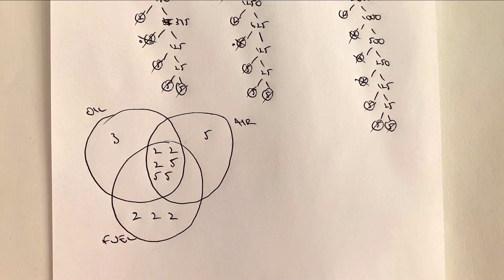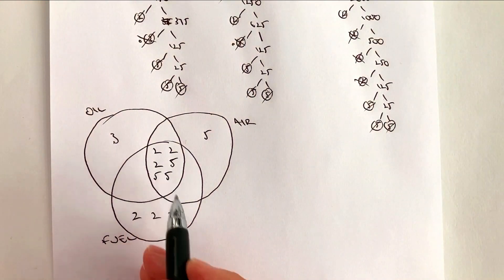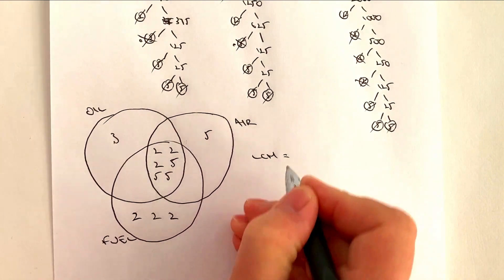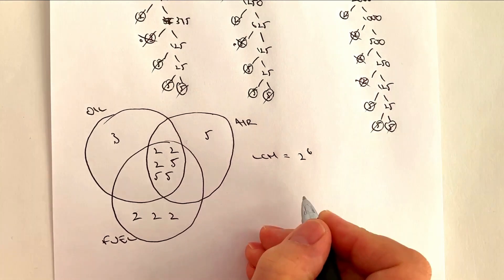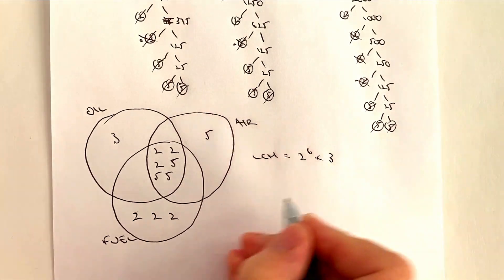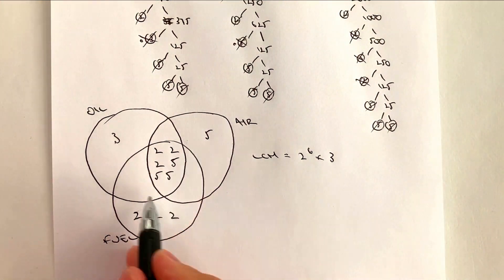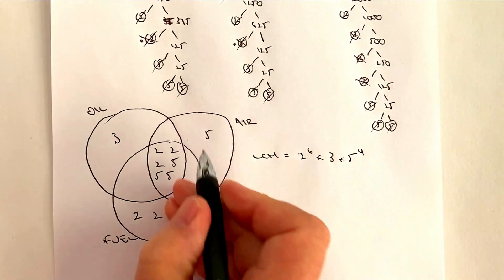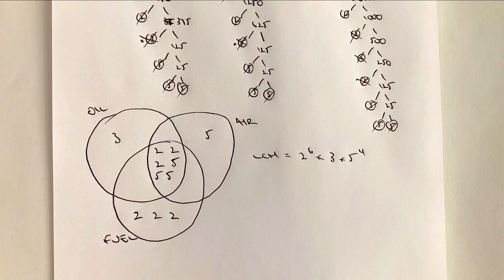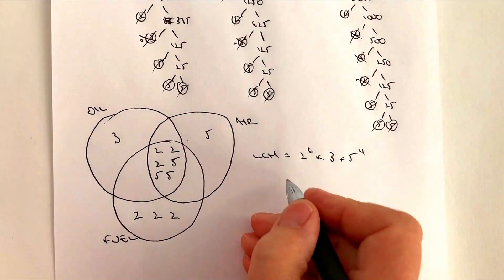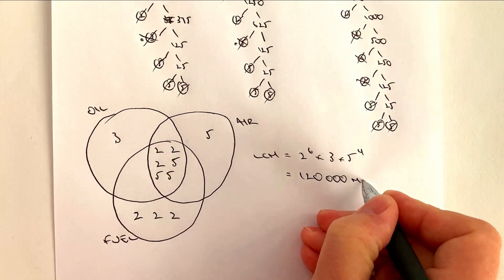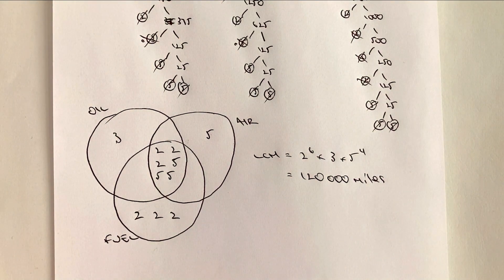Now for the LCM calculation. Counting all numbers: there are six 2s total, one 3, and four 5s. So the LCM is 2 to the power of 6, multiplied by 3 to the power of 1, multiplied by 5 to the power of 4. Put that into a calculator and you get 120,000. That is the LCM of 3,000, 5,000, and 8,000 — in miles.